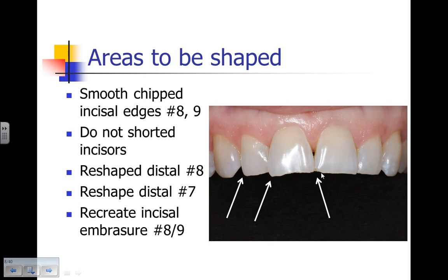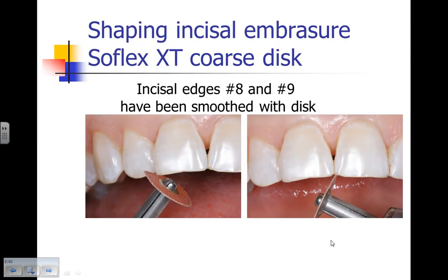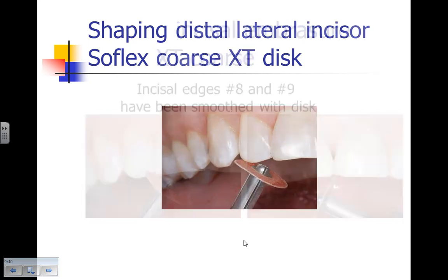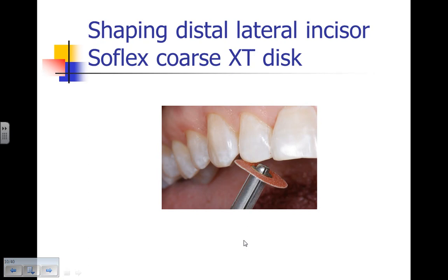We point to the chipping and the absence of the incisal embrasure between 8 and 9, and that the distal of number 8 is longer than the mesial. We also show them a length discrepancy and a slightly longer distal on number 7 that we can reshape. So our treatment plan is to reshape the distal of number 8, the distal of number 7, and recreate the incisal embrasure — that V-shape between number 8 and 9 — without shortening those incisors. We use an XT coarse disc to reshape the distal of number 8 and create the incisal embrasure, then smooth the rough incisal edges on the mesial of number 9 and incisal edge of number 8, and gently reshape the distal of number 7.